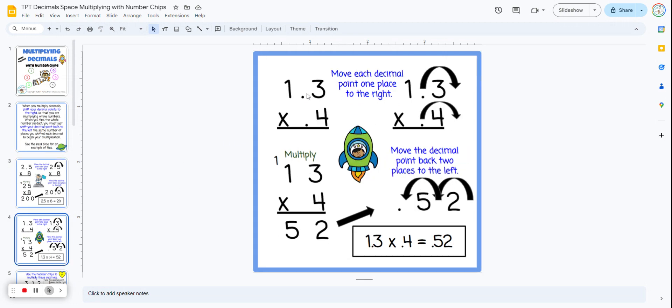Here's an example of when you have to move the decimal point twice, so two places to the right. And when you get your answer, you move it back two places to the left.